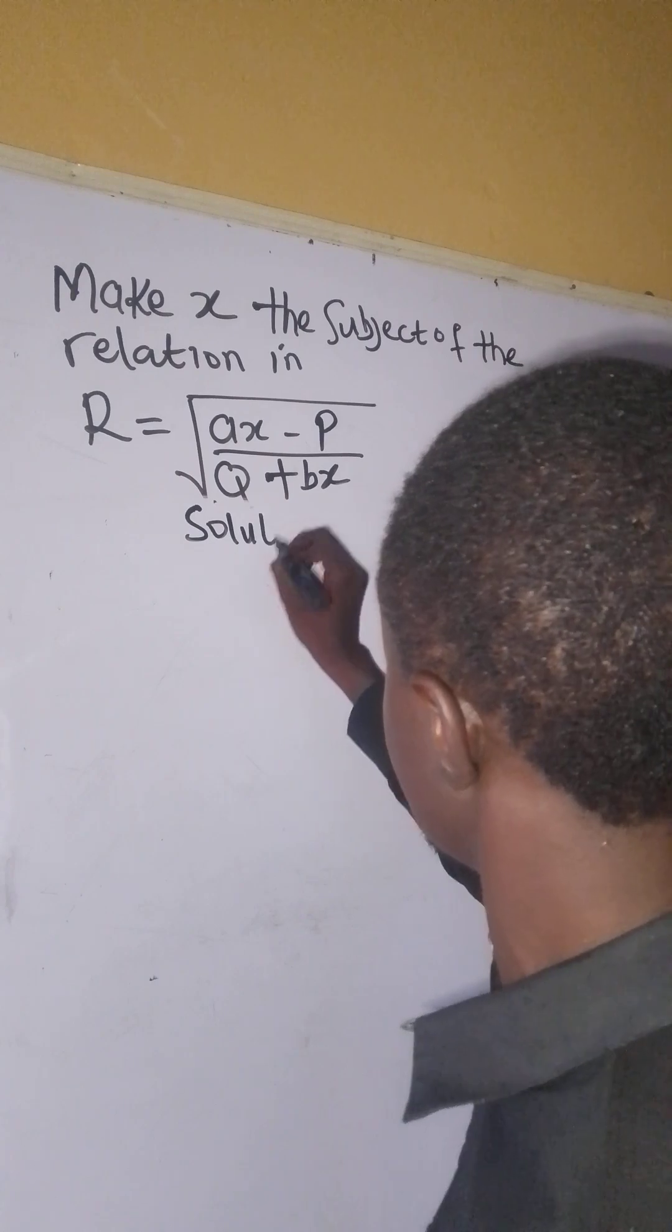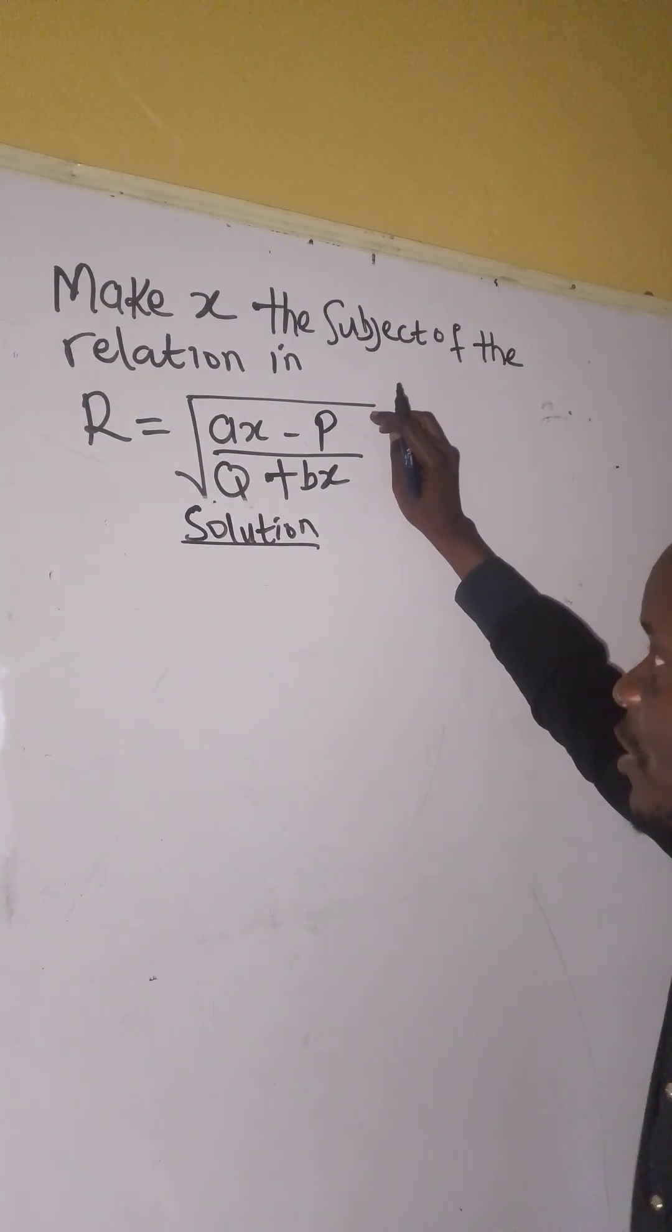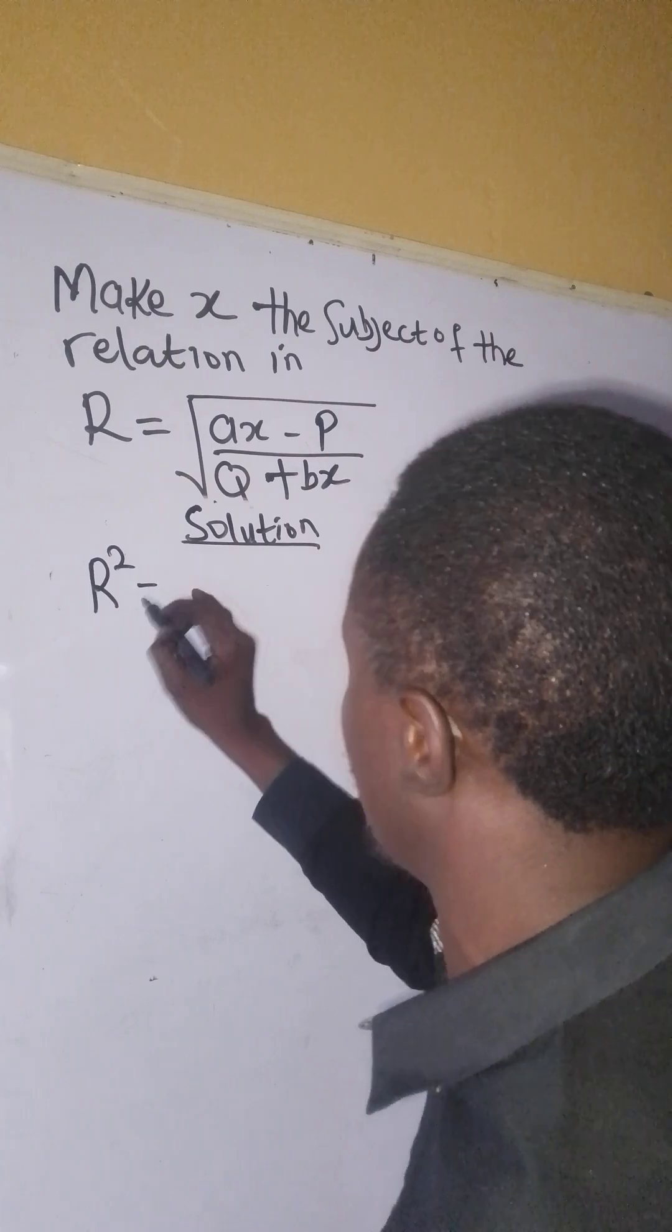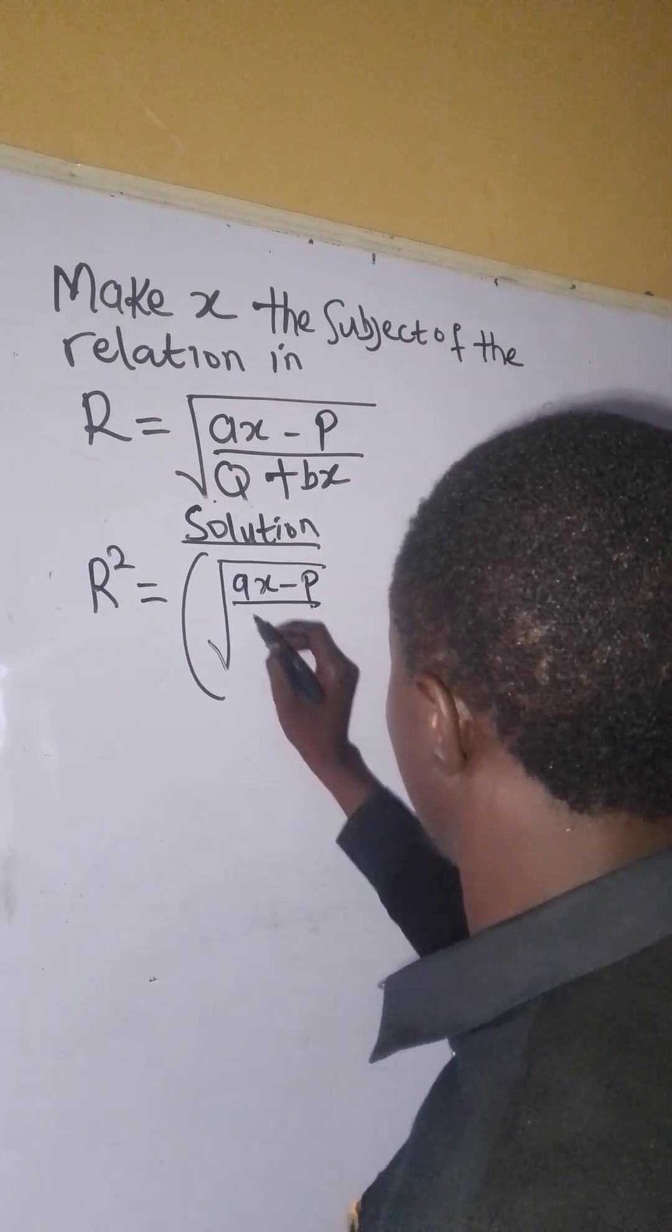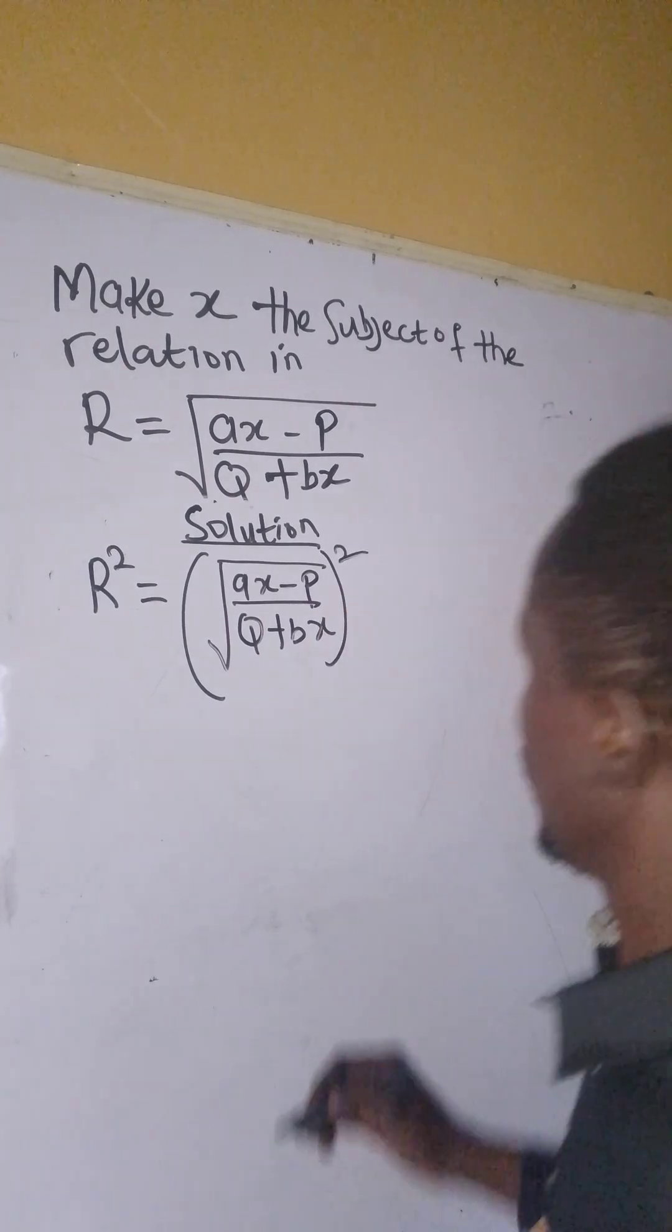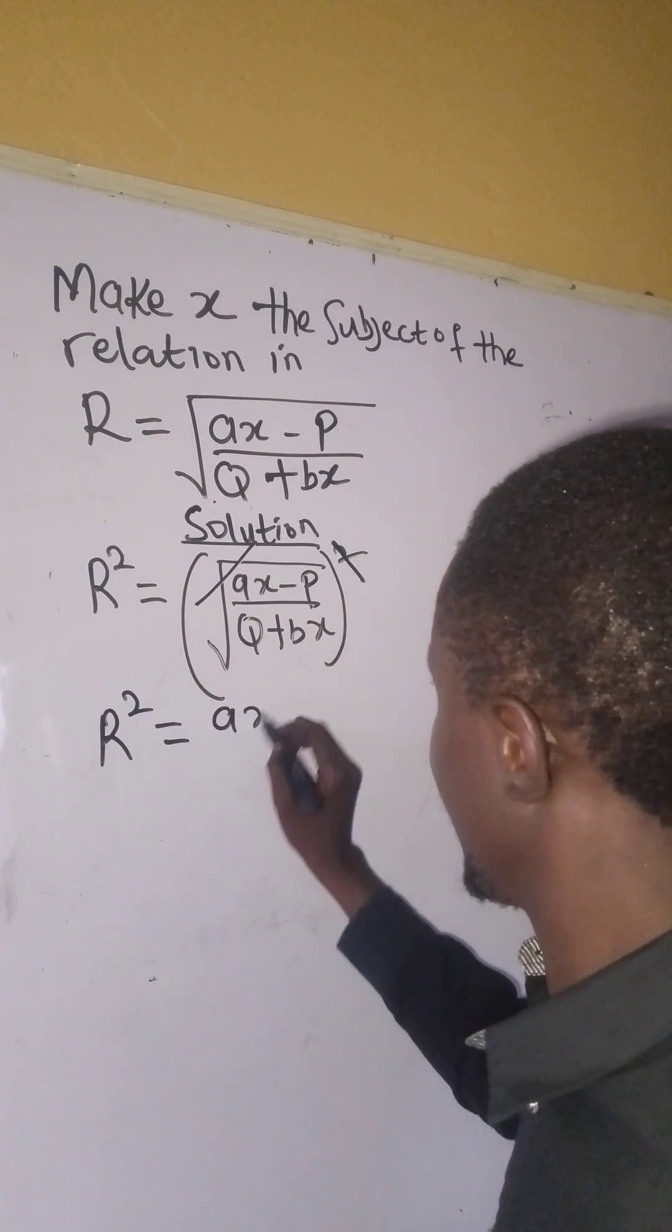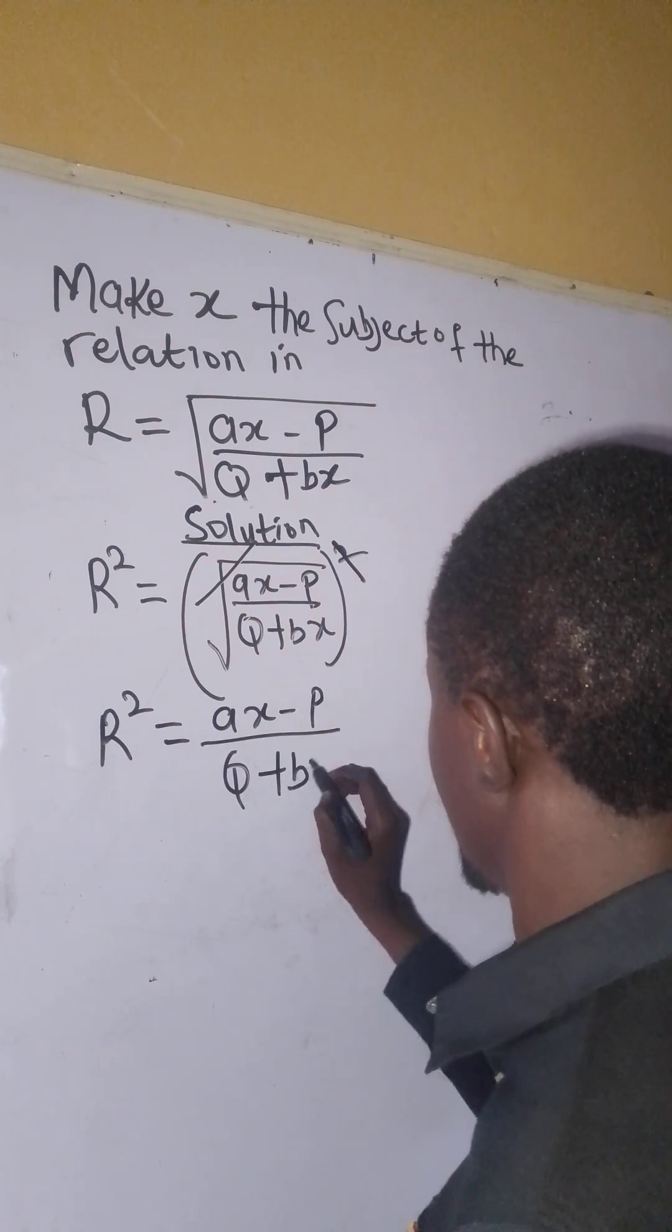So we have our solution. What can we do here? This is the first mountain - we have to find a way to remove this root. We square both sides: r² equals the square of √(ax - b)/(q + bx). Once we square both sides, this square will cancel the root, giving us r² = (ax - b)/(q + bx).